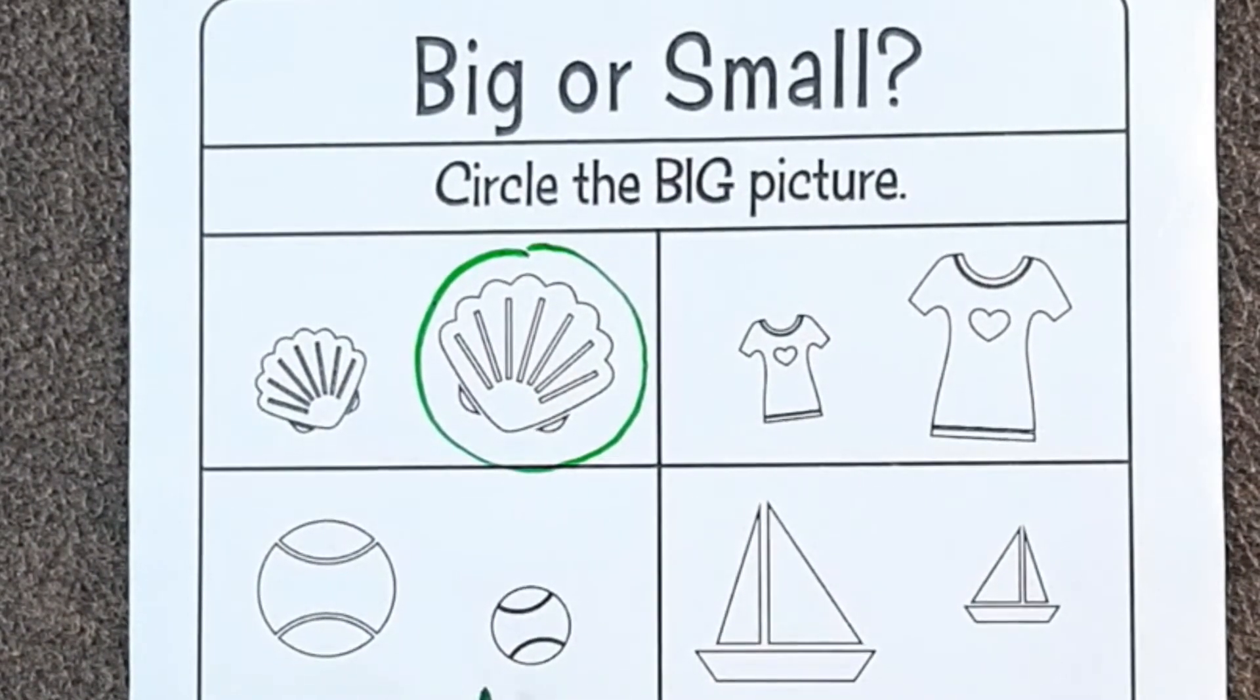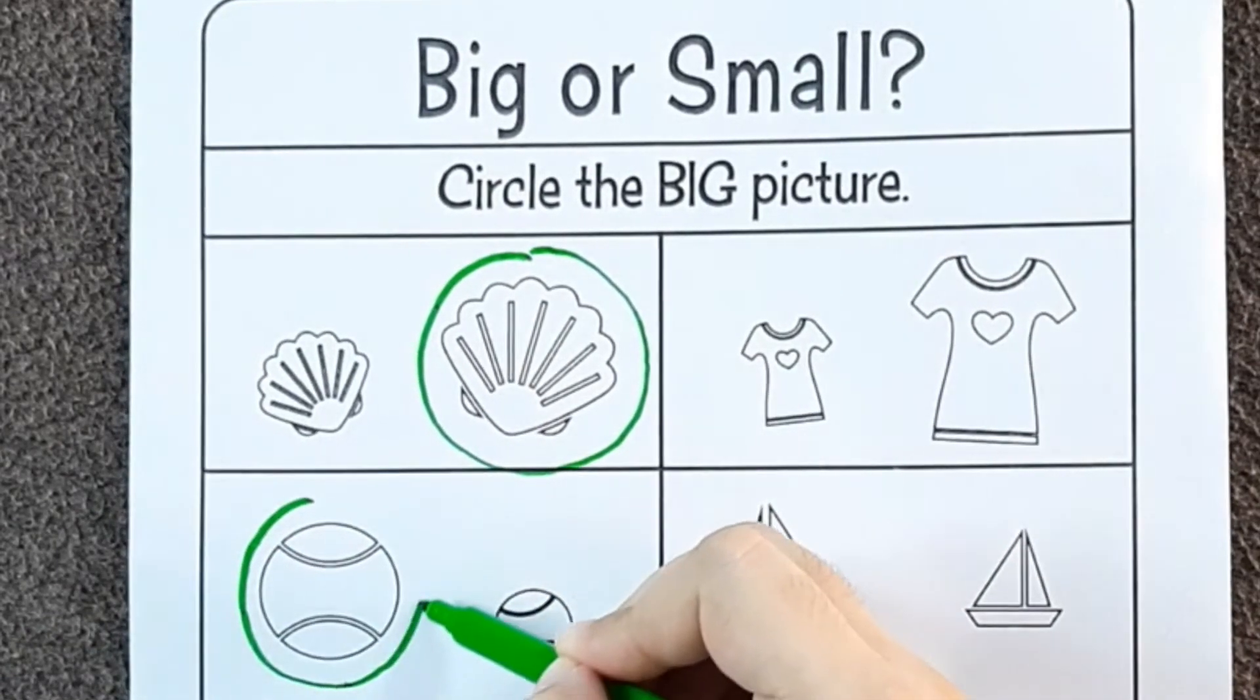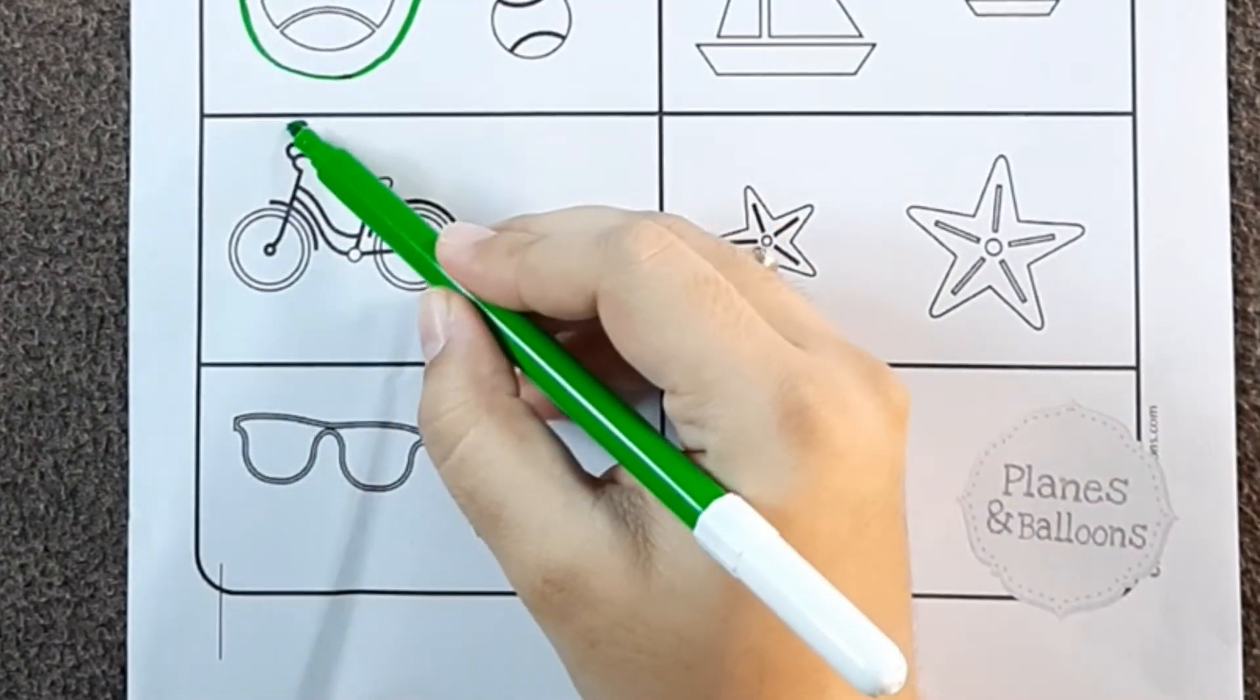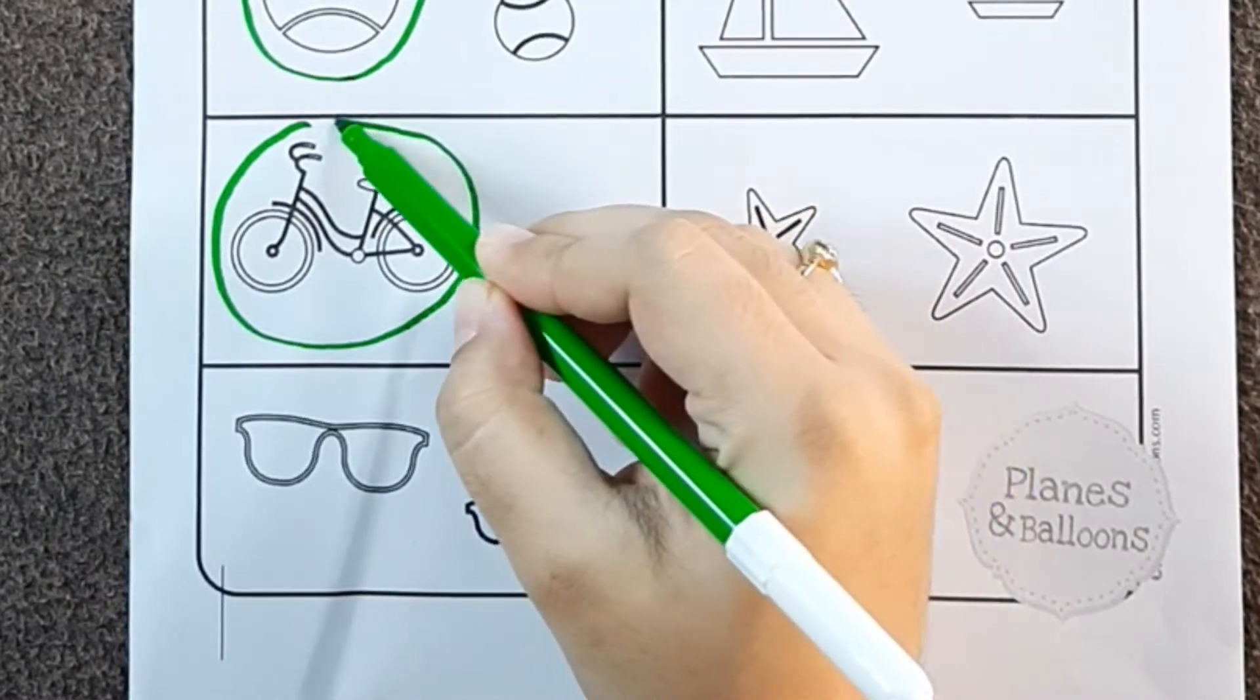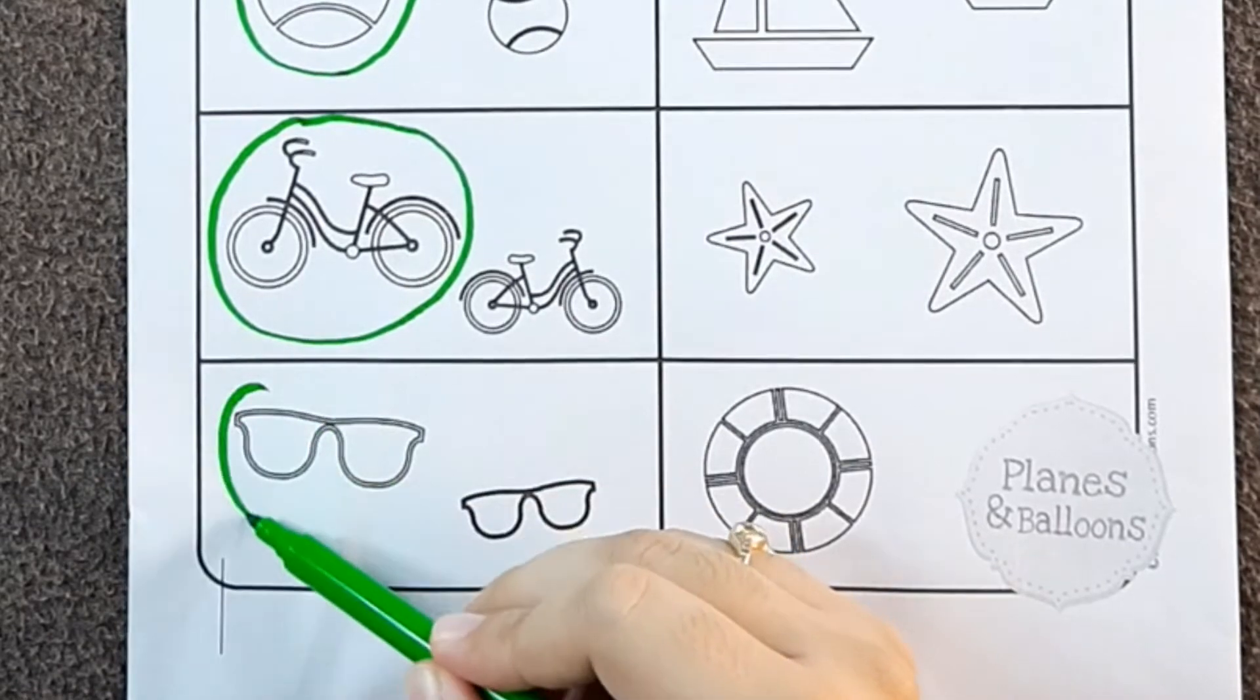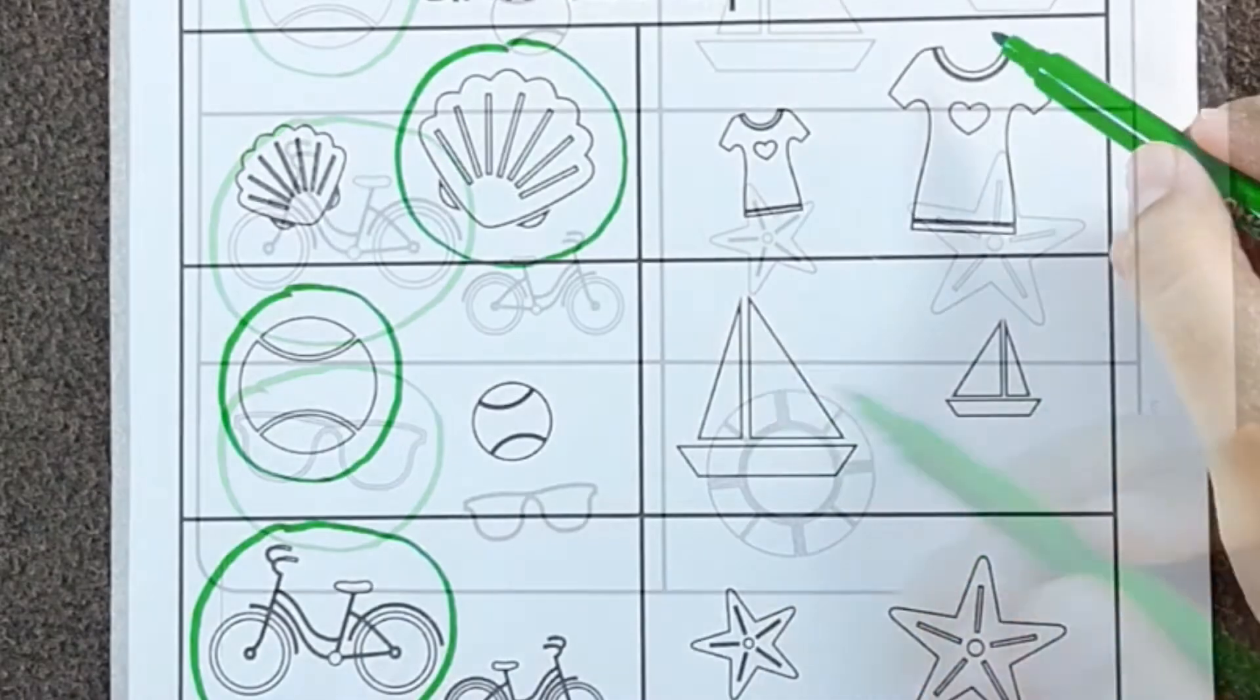From these two balls, this is bigger. From these two cycles, this cycle is bigger. From these two glasses, this is bigger.